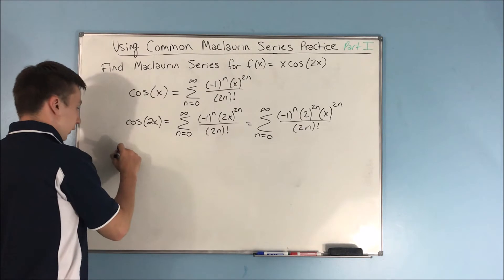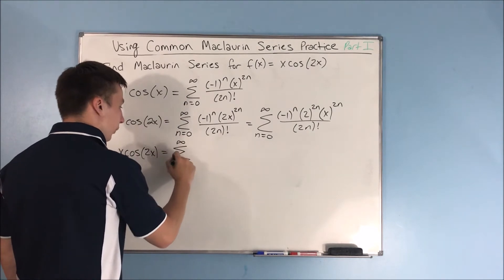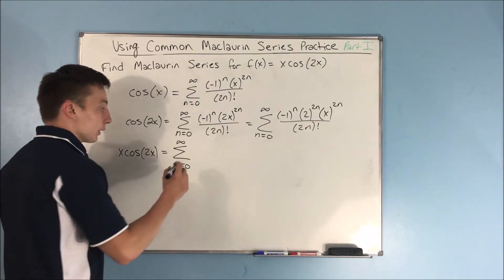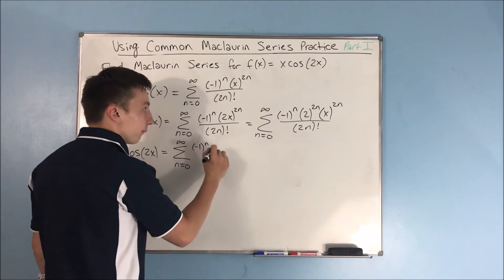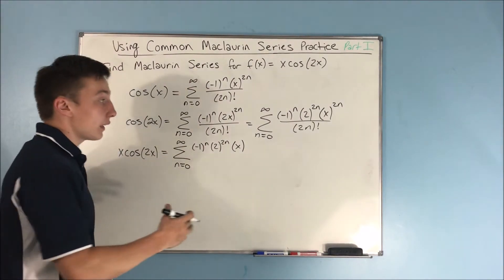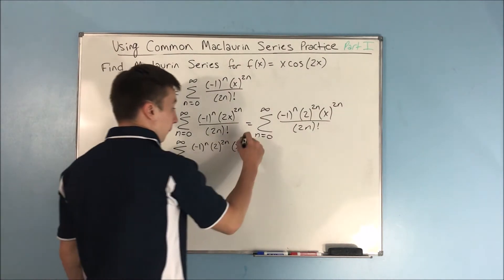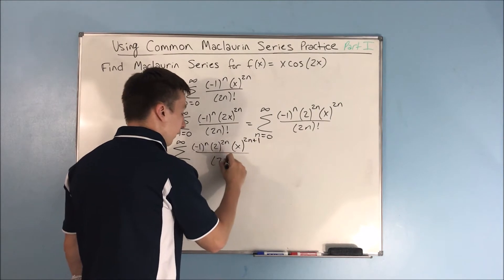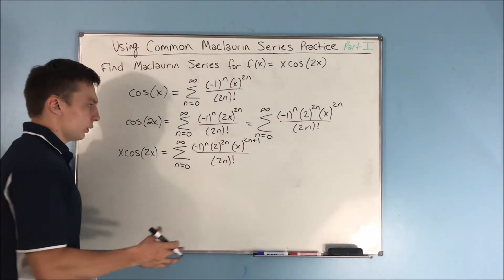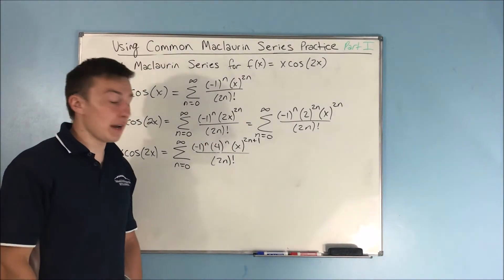Now all we have to do is multiply by x. x·cos(2x) is going to equal the sum from n=0 to infinity — we just multiply an x through. We get (-1)^n times 2^(2n) times x^(2n+1) over (2n)!. If you want less of a mess around the 2, you can say that 2^(2n) is 4^n. There you go — that is your Maclaurin series.